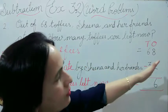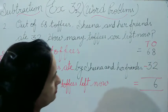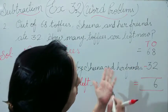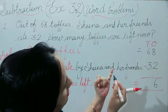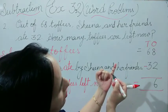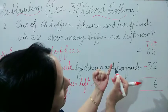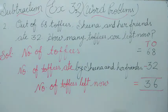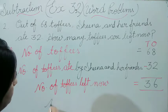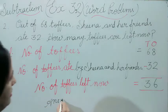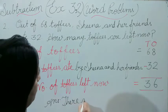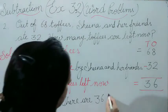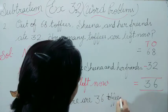Always try the subtraction from the right side. Now 3 after, count till 6: so 3 after 4, 5, 6. Now we will count these numbers: 1, 2, 3. So which answer are we getting here? 36. So how many toffees are left? There are 36 toffees left.